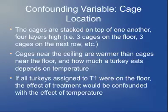In this experiment, the confounding variable was the location of the cage. The turkeys were kept in a series of cages that were four layers high — three cages on the floor, then three stacked on top of those, and so on up to level four. Since hot air rises, cages closer to the ceiling were warmer than cages closer to the floor, and how much a turkey eats depends on the temperature of the surrounding air. So if all turkeys assigned to the T1 group were towards the bottom of the stack, the effect of treatment would be confounded with the effect of temperature.